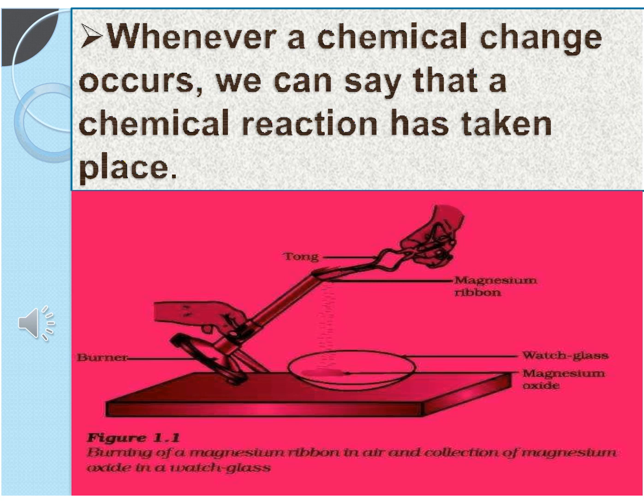There are two types of changes: physical change and chemical change. The changes in which the original substances lose their nature and identity and form new chemical substances with different properties are known as chemical changes. Such process involving a chemical change is called a chemical reaction.